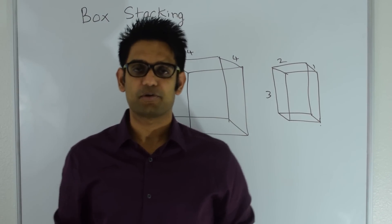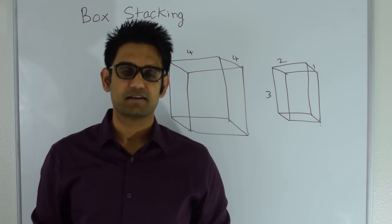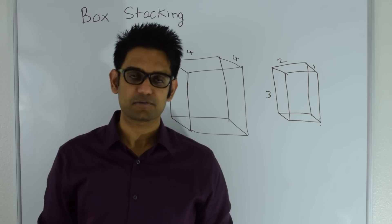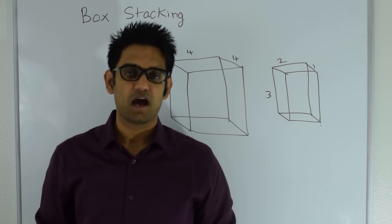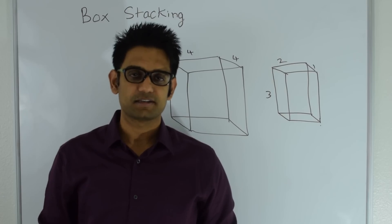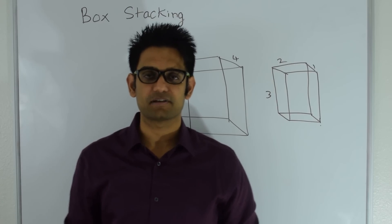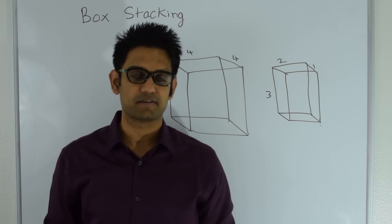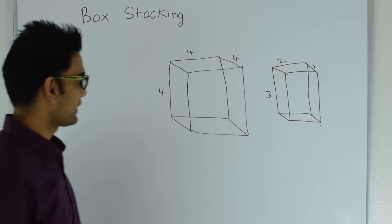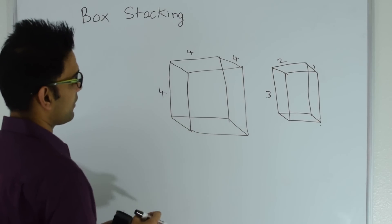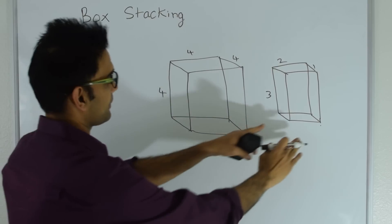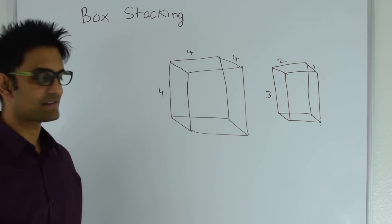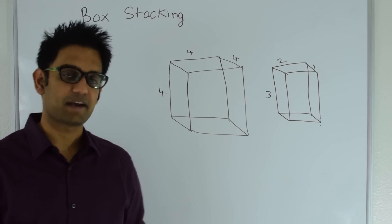Hello friends, my name is Tushar and today I am going to discuss the question of box stacking. You are given different lengths, widths and heights and you have an unlimited supply of boxes for each of these dimensions. How do you place the boxes on top of each other to get the maximum height, with the caveat that the box going on top should have strictly less length and width than the box below it?